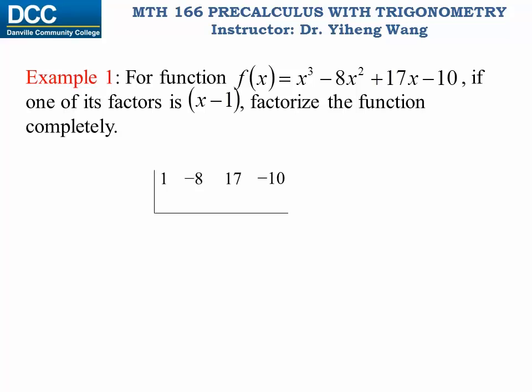For the divisor, the factor is x minus one. This factor indicates a zero of the function, that is x equals to one. Therefore we write x equals to one here — this indicates a divisor of x minus one. Now we're ready to perform the division.